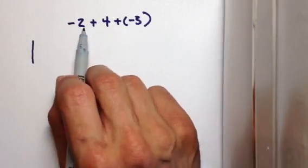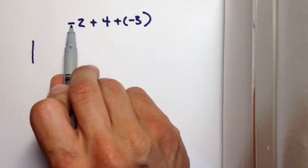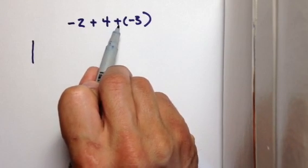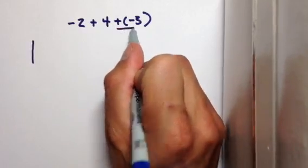Now before you do anything, here's my recommendation. Get rid of any double signs. There's no two signs here, it's just a negative and a number, there's just a positive and a number, but there is a double sign here because you have positive and negative. So you want to get rid of that sign.